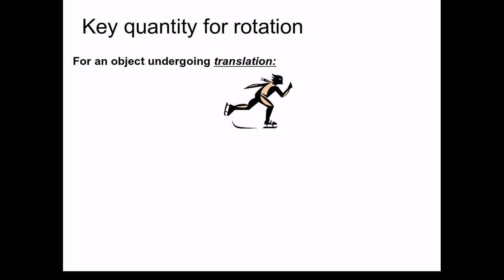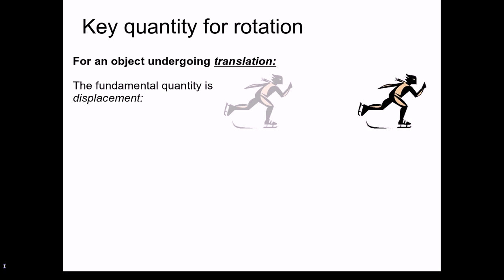So let's begin by trying to understand what's the fundamental quantity for a rotation. Well, to understand this, let's go back to the translation we've already spent quite a bit of time studying. For an object undergoing translation, such as this ice skater, the fundamental quantity is the displacement.